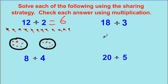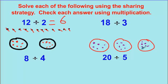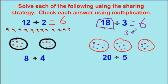For 18 divided by 3, I'll do the fast way. Draw three circles as groups, then distribute 18 dots — one here, one there, one there — until I've placed all 18. Count them up: six here, six there, and six there. So the answer is six. Check it: three times six is 18. Correct.